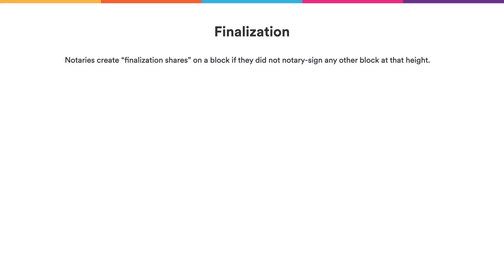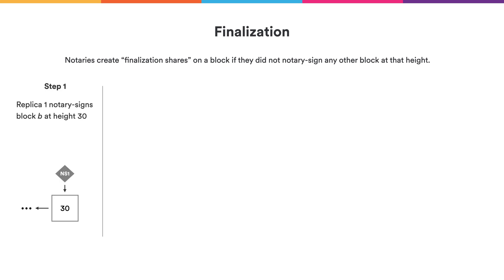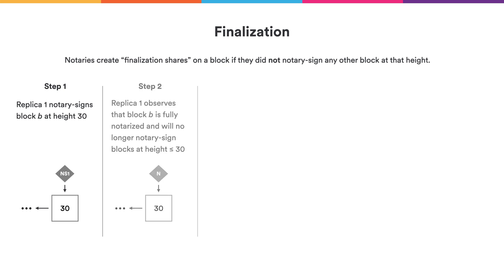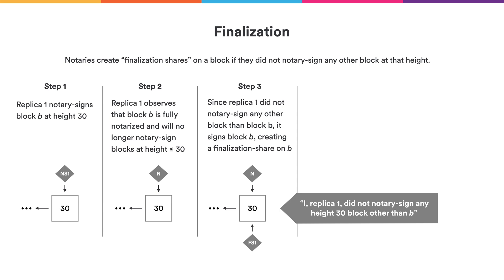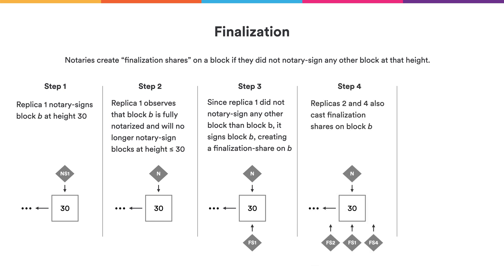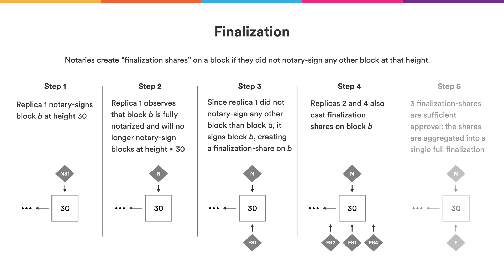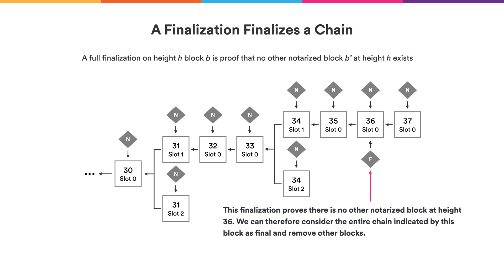More precisely, if the notary did not create any notarization shares for blocks other than the first notarized block for the round, it will create a different type of signature called the finalization share. The finalization share essentially means: I, replica one, did not notary-sign any height-30 block other than this one. This artifact is gossiped to the rest of the subnet, and if sufficiently many replicas also create finalization shares on the same block, we aggregate them into a single finalization — again requiring 3 out of 4, or N minus F more generally. Whenever we see such a finalization on a block, we know we can trust the blockchain up to that point, because a finalization proves no other notarized block at that height can exist.